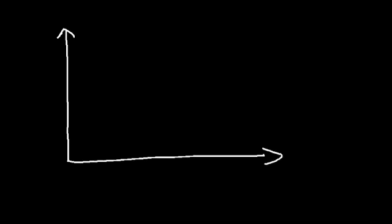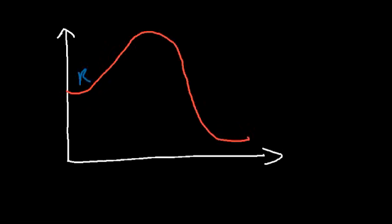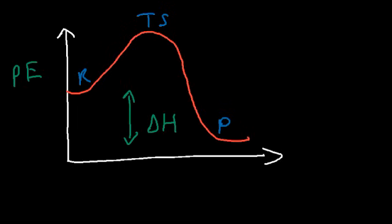Now consider this diagram. Notice that the energy of the products is lower than that of the reactants. Therefore energy was released since the potential energy of the system decreased. So delta H, the enthalpy of this reaction, is negative, and this represents an exothermic reaction.